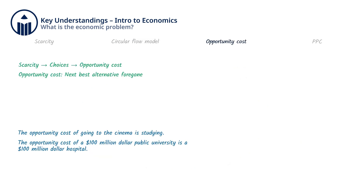Scarcity means we must make choices. When we devote resources towards making one thing, we cannot use those resources towards making something else. This is called opportunity cost. The opportunity cost of something is equal to the next best alternative to that thing, foregone. For example, the opportunity cost of going to the cinema with friends is studying for an upcoming exam and the benefits that would accrue to you had you done that instead. From the government's point of view, they might encounter opportunity cost when deciding how to spend public funds — the opportunity cost of building a $100 million public university is a $100 million hospital.